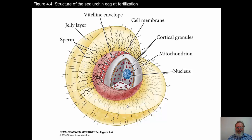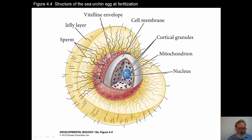This is the structure of a sea urchin egg at fertilization. You can see that sperm have started to go into the jelly layer, extending down toward the vitelline envelope. Eventually one will penetrate and fuse with the cell membrane. There are cortical granules inside the cell membrane, which are important to prevent polyspermy. Here is the haploid nucleus of the egg, and there are mitochondria that will have roles in oxidative metabolism of the egg as it gets ready to form a new individual.